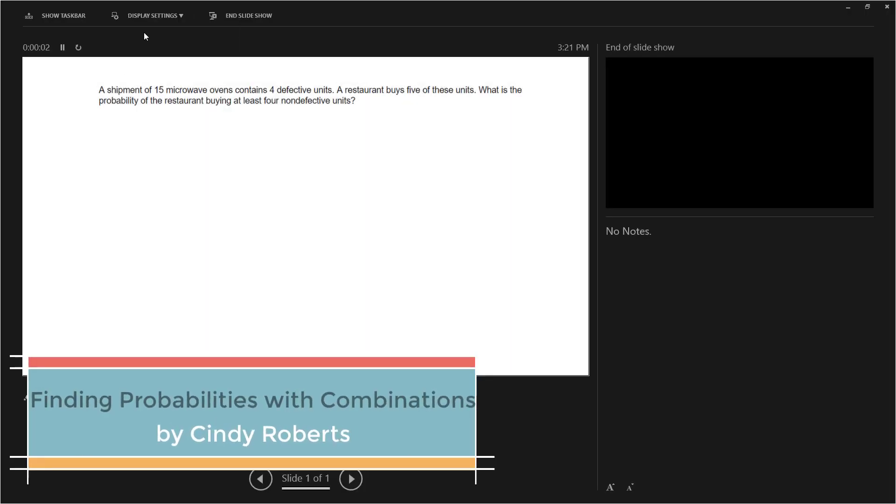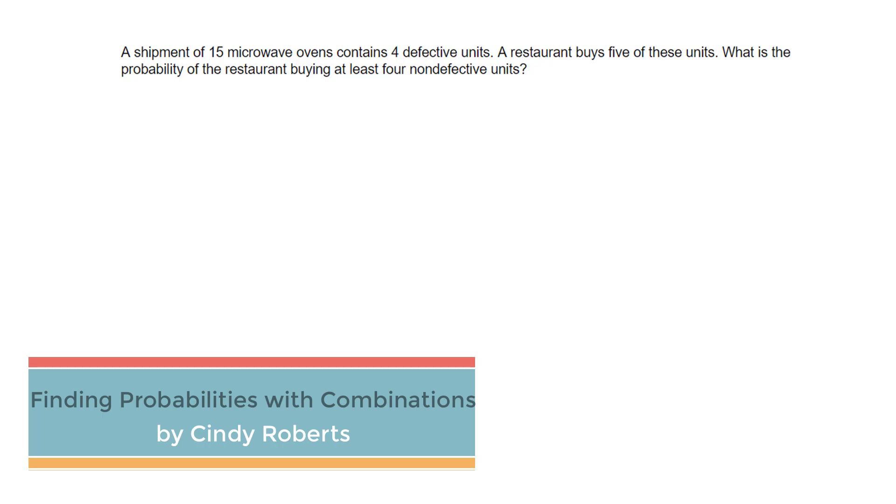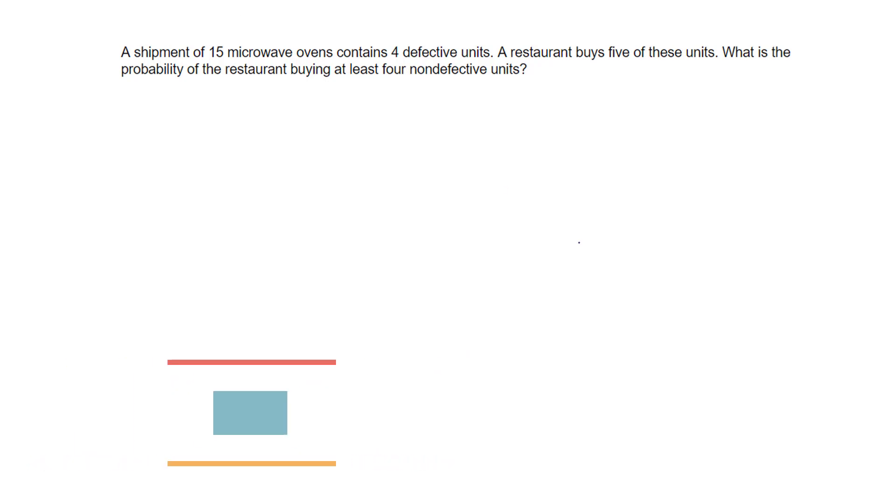Okay, let me get things moved around here. So we're given a question asking if we have a shipment of 15 microwaves, that's my total n, and 15 microwaves contain four defective. So there's four defective, which of course makes sense. There would be 11 non-defective.